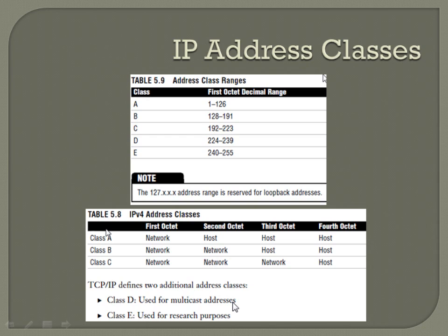Starting at the top, anything that starts with 1 to 126 is going to be a Class A address — this is for the first octet. 127 is excluded from there because it's reserved for loopback addresses, with 127.0.0.1 being yourself.